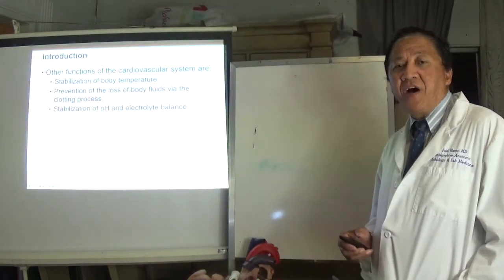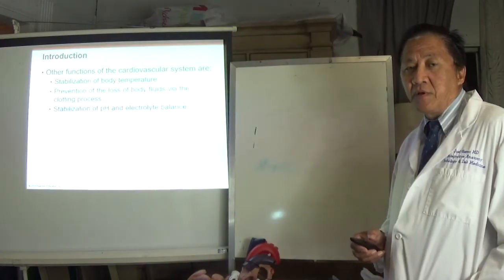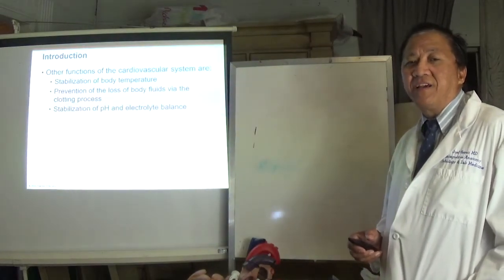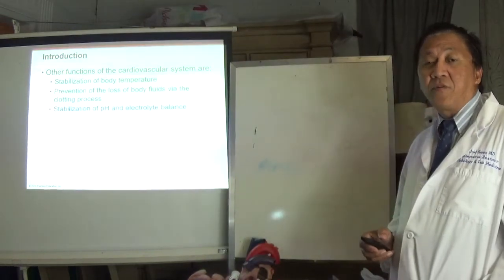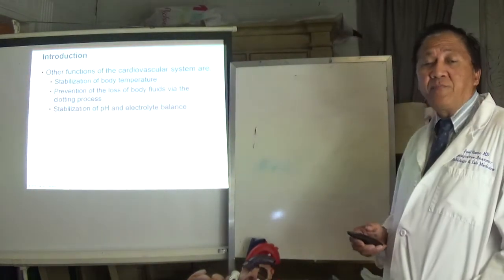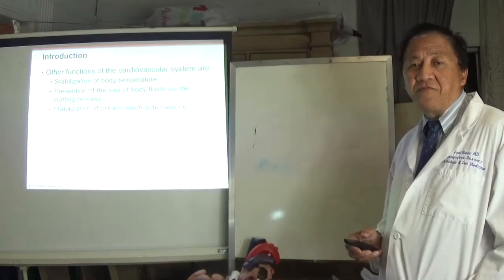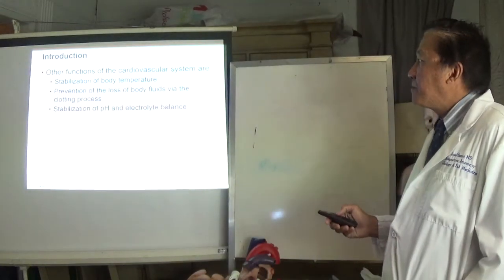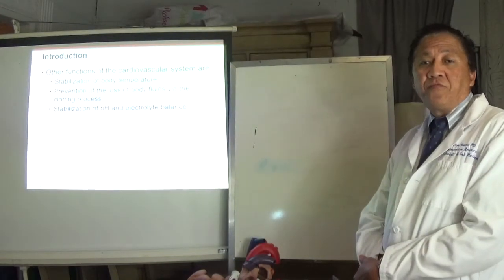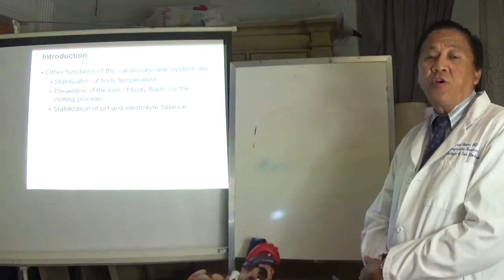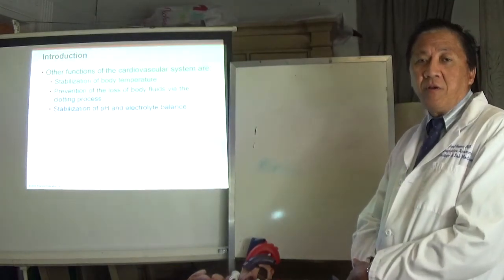The normal pH of blood ranges from 7.35 to 7.45. Anything below 7.35 is acidic and anything above 7.45 is alkaline. Electrolyte balance refers to the amount of sodium, chlorine, potassium, and calcium in the human blood.